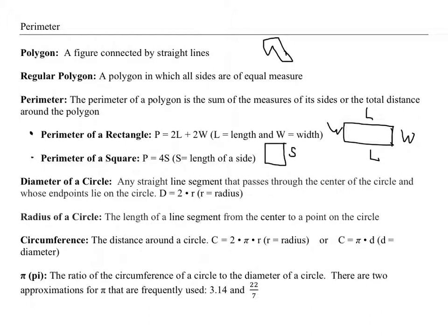The diameter of a circle is a straight line that passes through the center of the circle. The radius is the distance from the center to a point on the circle. The circumference is the distance around a circle and this is the formula.